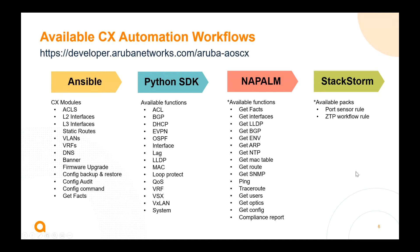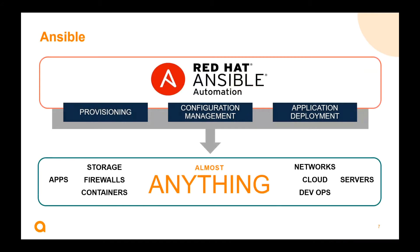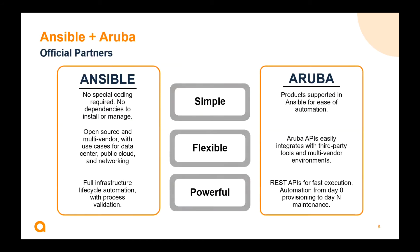Ansible is used in several different data center as well as highly scalable environments. It's a Red Hat product that really allows for provisioning, configuration management, and application deployment at scale — not only for networking, but also for servers, switches, storage, and more. Ansible works really well with Aruba; in fact, we are official partners and we've helped establish that through our Aruba Ansible collections. This makes it simple, flexible, and powerful to utilize Ansible in these highly scalable environments with Aruba CX switches.